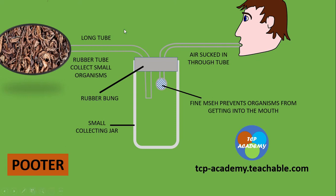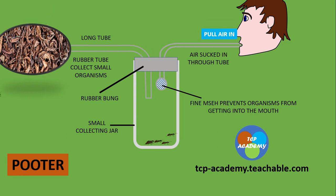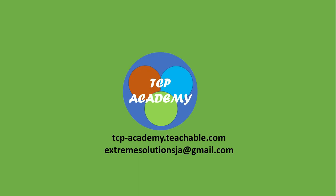The top of a pooter is usually with either a cover that is pulled on or a bung placed in the tube. We are seeing all the parts here being labelled. The animation goes to show very quickly what happens — the air is all pulled in, and as the air is pulled in, the organisms are collected in the jar. That's the presentation on using the pooter.